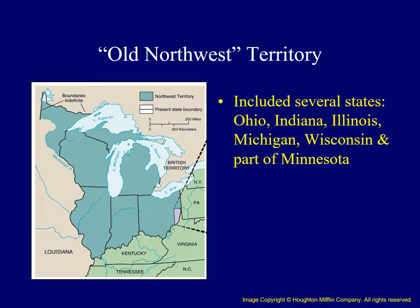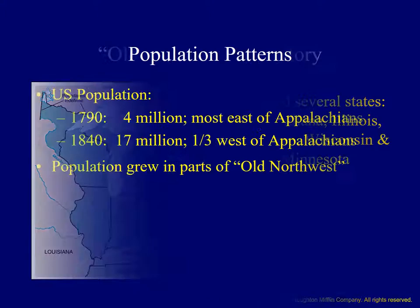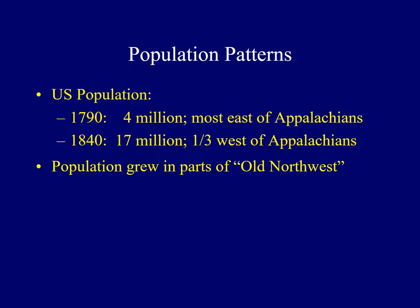This map of the Northwest Territory encompasses much of today's upper Midwest or Great Lakes region, including the states of Ohio, Indiana, Illinois, Michigan, Wisconsin, and one section of Minnesota. The increase in settlement was dramatic. Ohio's population increased from 45,000 in 1800 to over 500,000 in 1820, and by 1840 it had grown to over 1.5 million. Michigan's population increased from 5,000 in 1810 to over 200,000 by 1840.